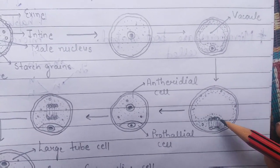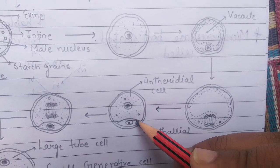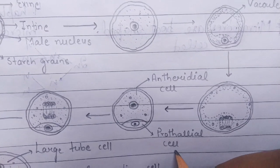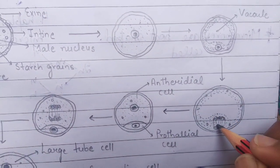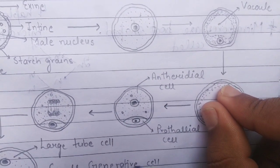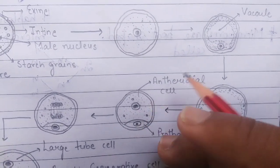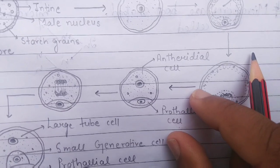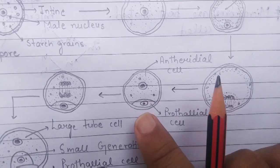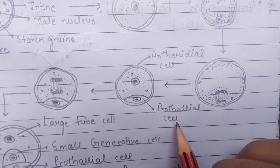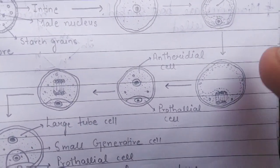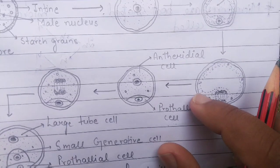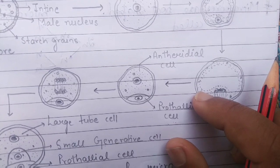After the vacuole disappears, the male nucleus divides mitotically to form two daughter nuclei, which are separated from each other by the formation of a wall. This leads to formation of a small prothallial cell towards the proximal end and a very large antheridial cell. The prothallial cell is a single persistent cell and represents a single-celled vegetative body of the male gametophyte. It does not divide further and remains completely dependent.